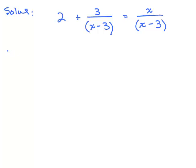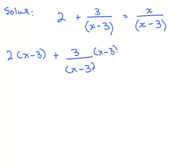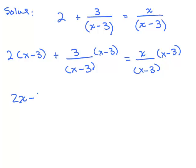Multiplying each term by (x minus 3): on the left, 2 times (x minus 3) — nothing cancels — so using the distributive property gives 2x minus 6. Then the fraction term: multiplying by (x minus 3) cancels the denominator, leaving plus 3. On the right side, multiplying by (x minus 3) also cancels the denominator, leaving x. So we have 2x minus 6 plus 3 equals x.